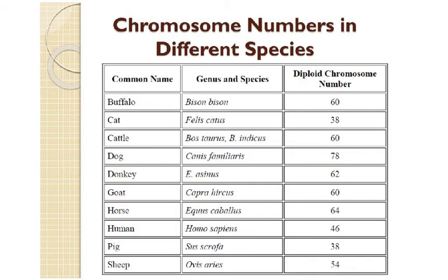Now let's talk about chromosome numbers. When checking exam papers I see students writing that every cell has 46 chromosomes, which is wrong on two counts — the number varies by species, and red blood cells have no nucleus and therefore no chromosomes.